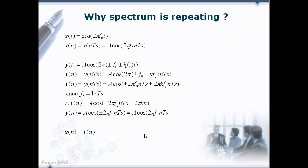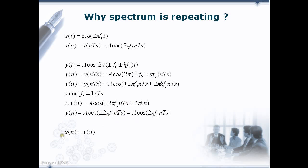Here, I have taken a simple cosine signal x(t) of frequency F0 and it is continuous. We need to change it to discrete by replacing t with n·Ts. Then, take a signal y(t) of frequency F0 plus K·Fs. It is also converted to discrete by replacing t with n·Ts and multiplying inside. Here, we can cancel Fs and Ts because Fs equals 1/Ts. Finally, we get cos(2π·K·n + 2π·F0·n·Ts), which equals cos(2π·F0·n·Ts) because cos(2π·N + θ) equals cos(θ). At last, we get x(n) equals y(n).